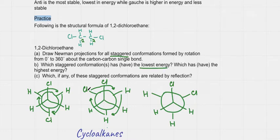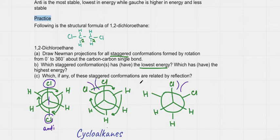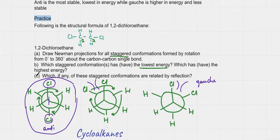Which of these has the lowest energy? This first conformation has the two chlorines opposite one another — this is called anti. The second has two chlorines right next to one another — they bump into each other, so it's less stable — this is gauche. The third also has two chlorines bumping into one another, so it's gauche as well. Anti is the most stable conformation. Finally, the two gauche conformations are mirror images of one another, so they are related by reflection.